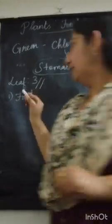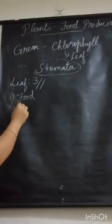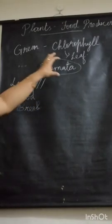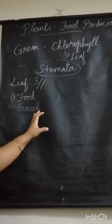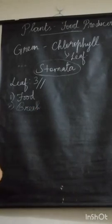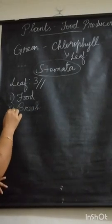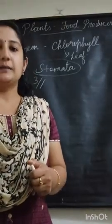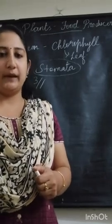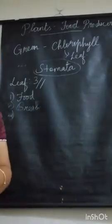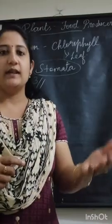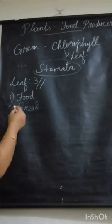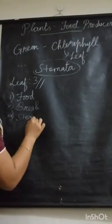The second function of a leaf is for breathing, because stomata are present and they help in breathing or the exchange of gases. The third function is that some leaves store food. Such leaves are your leafy vegetables — like cabbage, spinach. So the third function is for storing food.